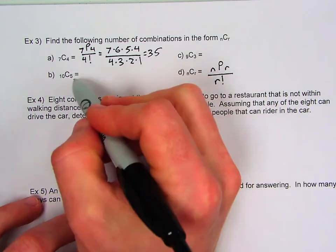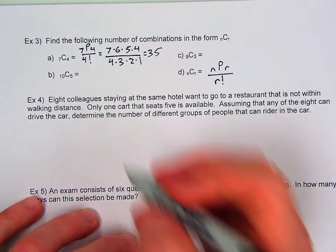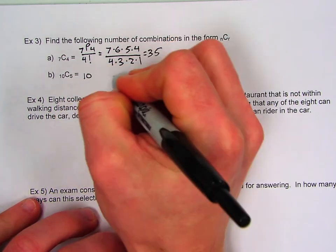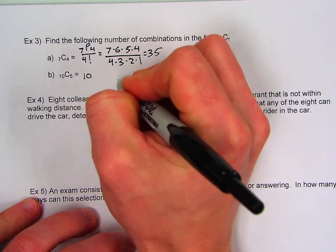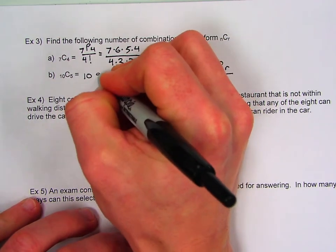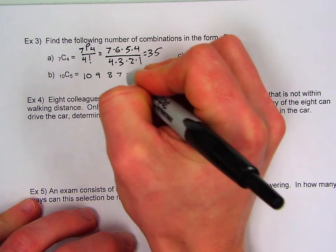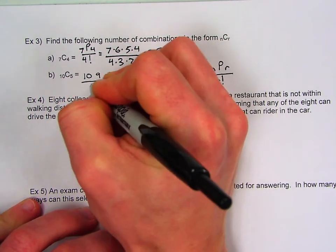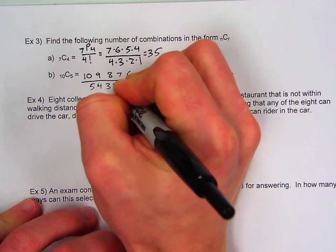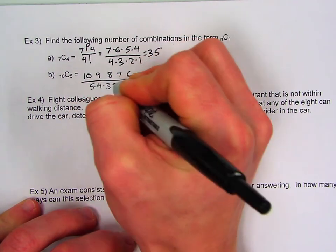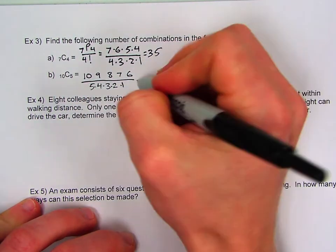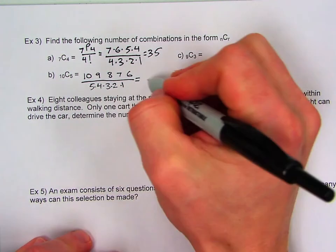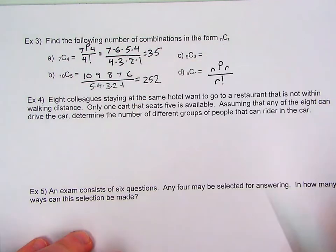So let's go ahead and go straight to the answer here for letter B. 10C5, so we're going to go 10 and go out five letters, or five digits. So 10, 9, 8, 7, 6. We're going to divide that by 5, 4, 3, 2, 1. And we would use the calculator and get 252 here.